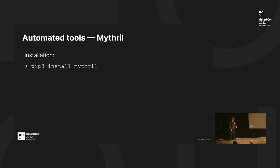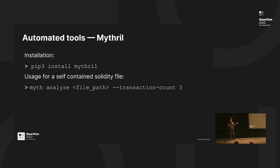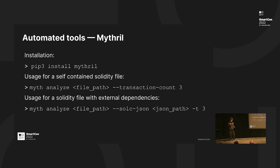Mythril is one of the symbolic execution engines, and it's fairly easy to install and run. It's just 'myth analyze [filename] [transaction count]' or whatever it is. And if your file has some external dependencies, you'll have to use a solidity.json file to map these — mapping all the file paths like OpenZeppelin libraries, et cetera.